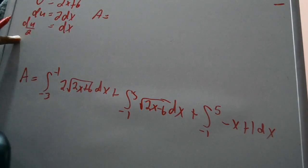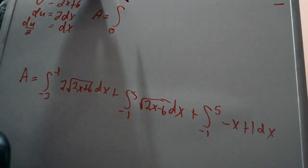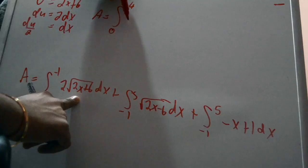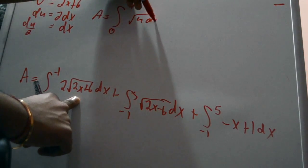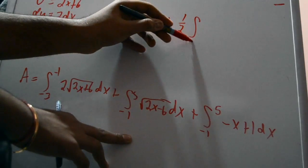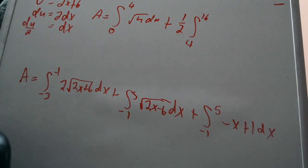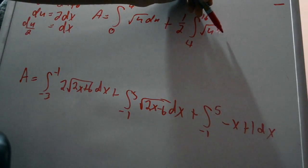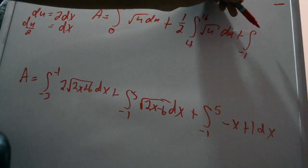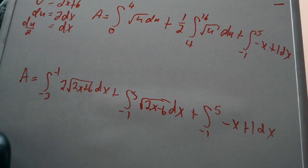We also need to change the limits of integration. Plugging x equals negative three and x equals negative one into u equals 2x plus 6 gives limits 0 to 4 for the first integral. For the second square-root integral, plugging in x equals negative one and x equals 5 gives limits 4 to 16. The last integral, negative x plus 1 dx from negative one to five, can be left in terms of x.